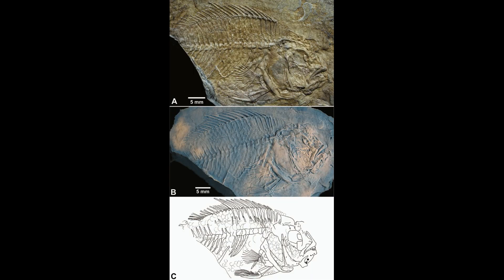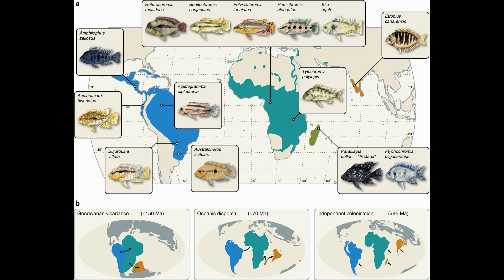However, the oldest known cichlid fossil, currently Plesioheros from the Eocene 46 million years ago of South America, substantially post-dates the breakup of Gondwana. Further, no Mesozoic or Cenozoic fossil cichlids are known from Australia, another piece of Gondwana, which would corroborate the vicariance model. Of course, one could argue that the fossil record is massively incomplete, so paleontologists are dealing with a very limited data set.